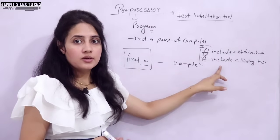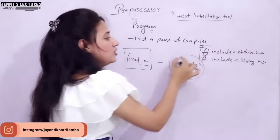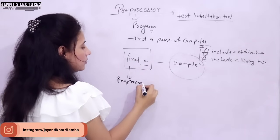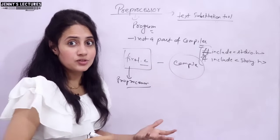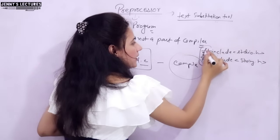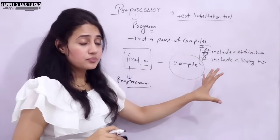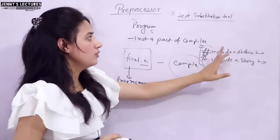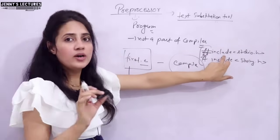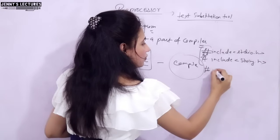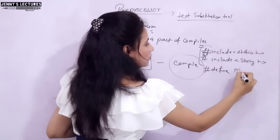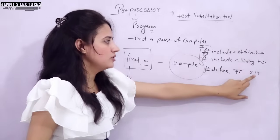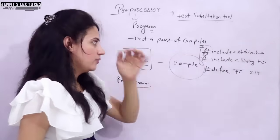The compiler is not going to understand lines starting with hash. So before the compilation process, the preprocessor comes into action. Whatever lines begin with hash - those are preprocessor commands, preprocessor directives - they give direction to the preprocessor. Hash include is one preprocessor directive. Hash define is also there. For example, hash define PI 3.14 - this is a macro definition.